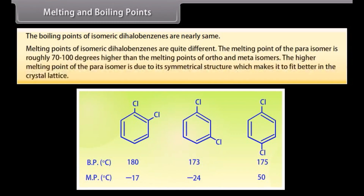The melting points of isomeric dihalobenzenes are quite different. The melting point of the para-isomer is roughly 70 to 100 degrees higher than the melting points of the ortho and meta isomers. The higher melting point of the para-isomer is due to its symmetrical structure, which allows it to fit better in the crystal lattice.